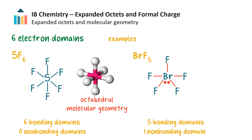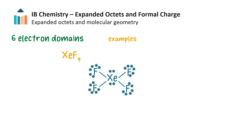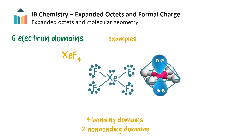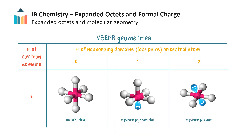In bromine pentafluoride, however, one of the domains is non-bonding. Although the electron domain geometry is octahedral, removing the lone pair we can see the molecular geometry is square pyramidal. Then, xenon tetrafluoride has 2 non-bonding domains and 4 bonding domains. Again, the electron domain geometry is octahedral, but the most stable structure formed from repulsion by the 2 lone pairs is a square planar molecular shape. These are the VSEPR geometries of molecules with 6 electron domains, along with their bond angles.